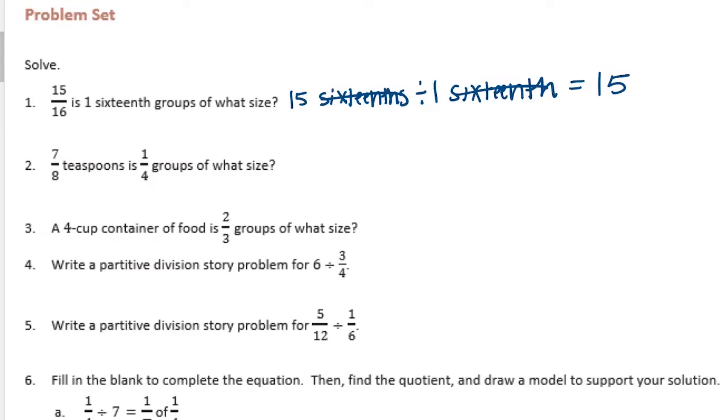Number 2: 7 eighths teaspoons is 1 fourth groups of what size? So we have 7 eighths divided by 1 fourth, but those don't have a common denominator. So I'm going to change 1 fourth into 2 eighths.